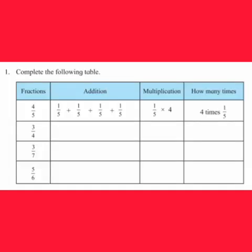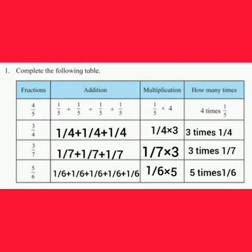Let's complete the given table by writing the addition form and multiplication form of the given fraction. The fraction 4 upon 5 can be written as 1 upon 5 plus 1 upon 5 plus 1 upon 5 plus 1 upon 5 in the addition form, and 1 upon 5 into 4 in the multiplication form. Remember, 4 times 1 upon 5 gives the fraction 4 upon 5.